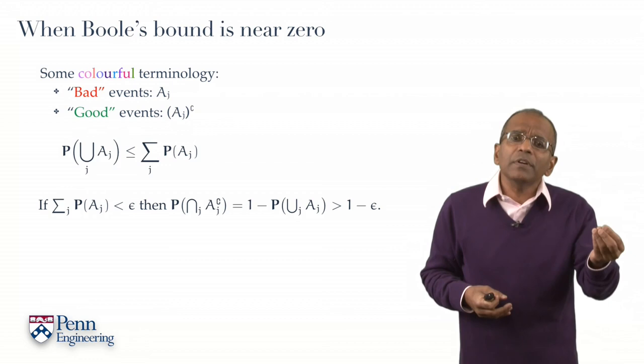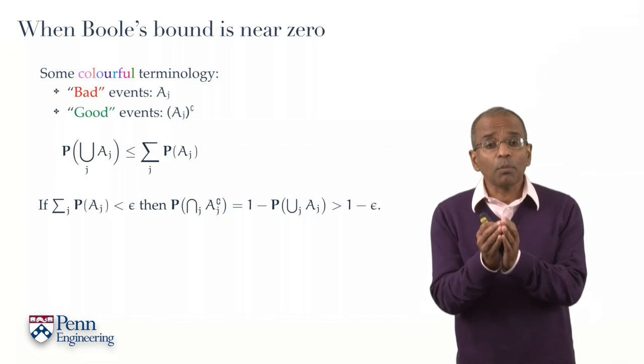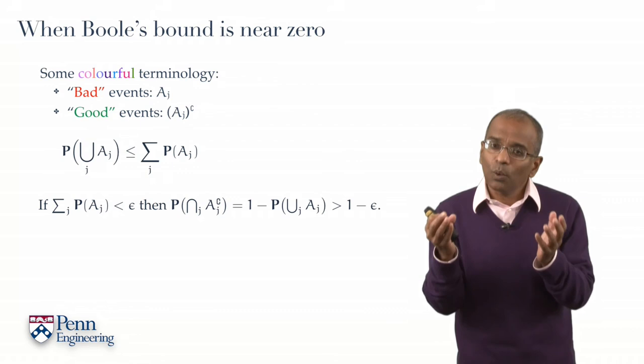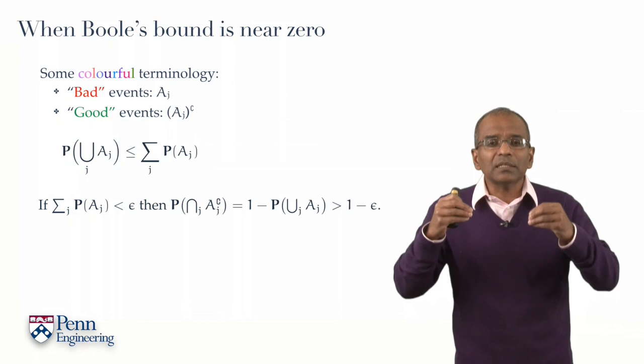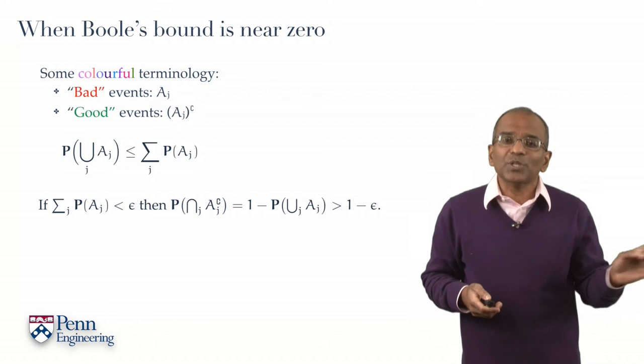If you want to be very mathematically precise about it, if the sum on the right is no larger than some given tiny positive quantity epsilon, then the probability of the intersections of the complements of these events, one minus the probability of the union of these events, the probability that nothing bad happens, will exceed one minus epsilon.